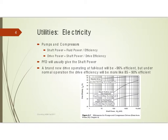We usually in our thermodynamics courses don't think about the drive or motor for the pump or compressor. Typically if they're brand new and operating at fairly full load they're going to be pretty efficient — about 96% efficient. But over time they decline, and an older drive is going to be less efficient — probably more like 85 to 90% efficient over time. I have actually seen in some unit operations labs on various campuses drives that were much lower efficiency than that.